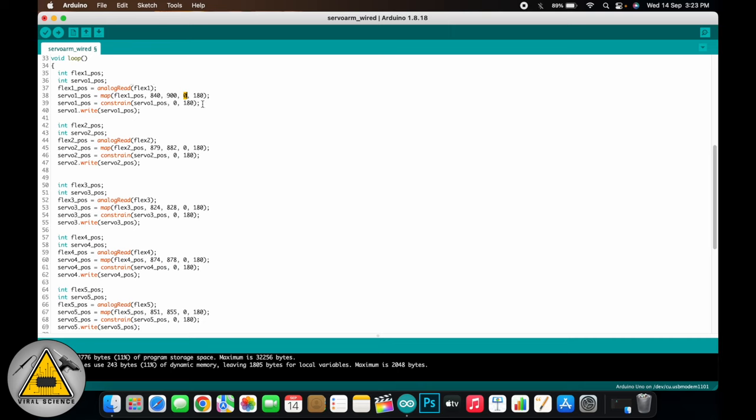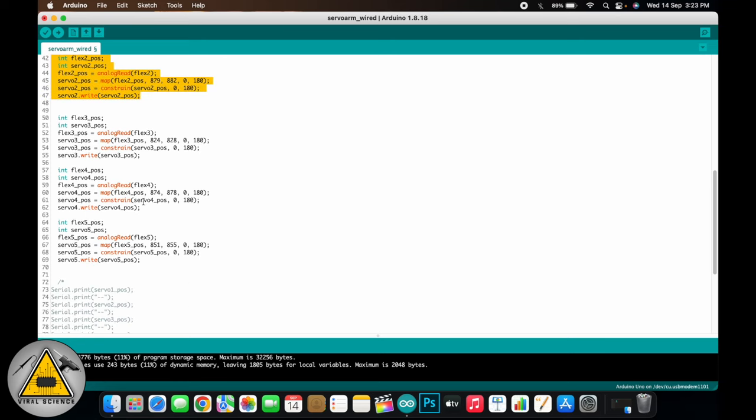For example, if the flex sensor reading is 870, then it lies in the first range and it's exactly at the center of that range. So same will be mapped to the second range. So the center of the second range that is 0 to 180 will be 90 degrees. So 90 will be the output of this function and we will set the servo angle to the 90 degree. So similarly, this thing will be done for all the flex sensors and their corresponding servo motors.